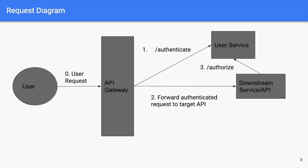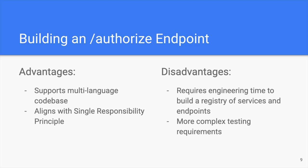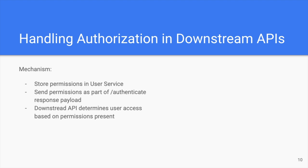There are a few trade-offs to think about when considering building out an authorized endpoint. On the one hand, this is most likely the best solution if you have a microservice ecosystem that needs to support a wide variety of languages and frameworks. Additionally, it aligns well with the single responsibility principle by abstracting out authorization functionality into a single place. On the other hand, it requires a certain amount of engineering lift to effectively build out a registry of services and endpoints and tie those in with your permissioning system. Additionally, it can make your testing requirements more complex.